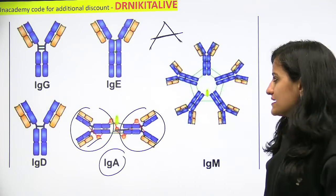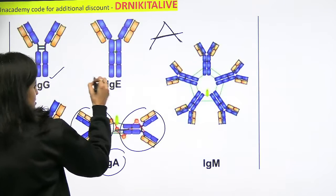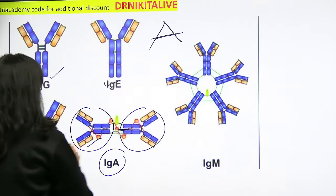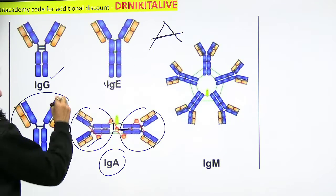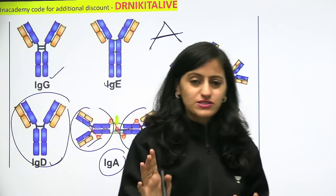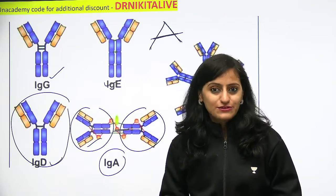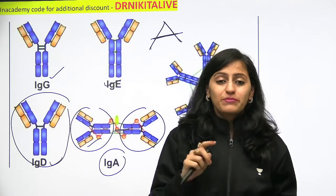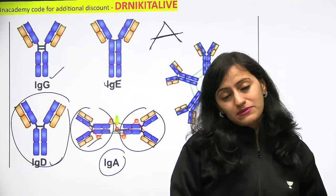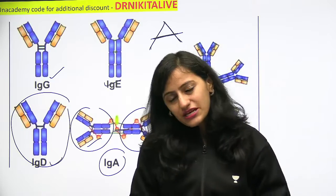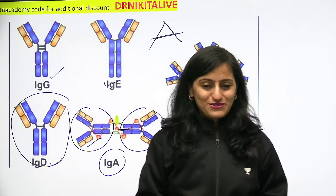The rest — IgG, IgE, and IgD — are normal monomeric structures with two heavy chains and two light chains. So remember: massive is M, it's a pentamer, and IgA is the dimer.